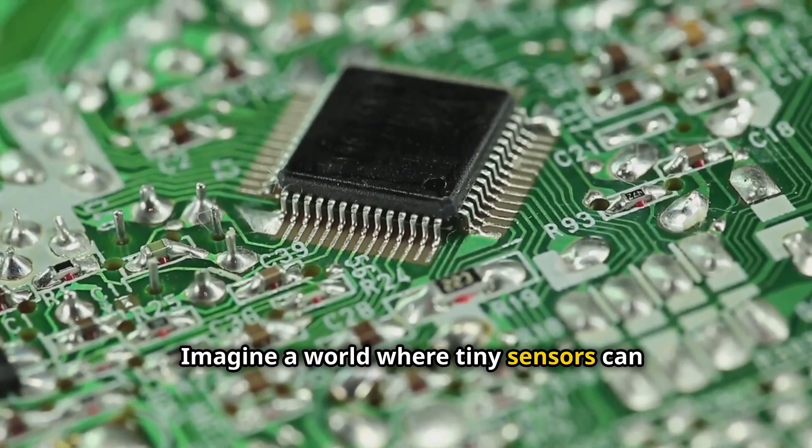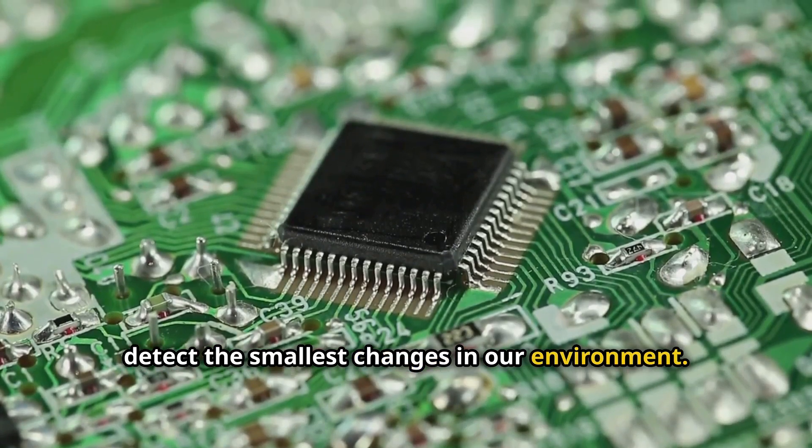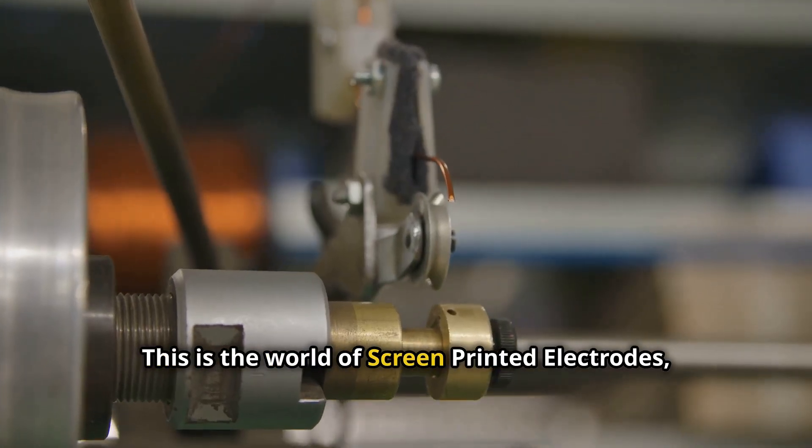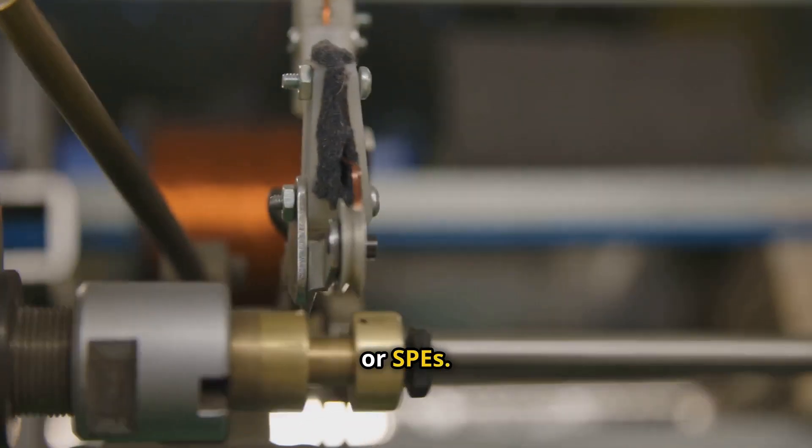Imagine a world where tiny sensors can detect the smallest changes in our environment. This is the world of screen-printed electrodes, or SPEs.